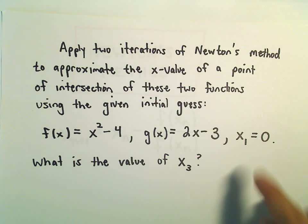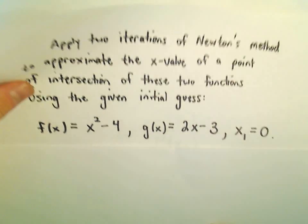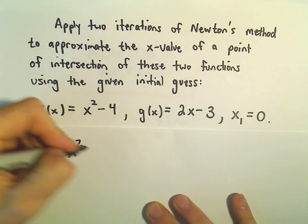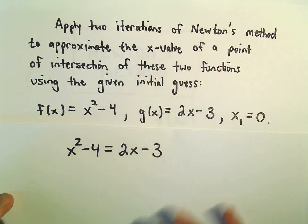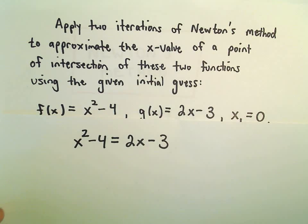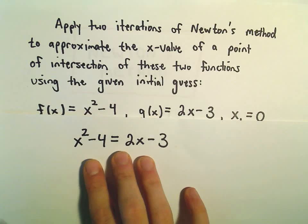And we're even going to be given the first guess that x sub 1 equals 0. So if we try to find points of intersection, we can just set the two functions equal to each other. What Newton's method does is it takes an equation and tries to find the zeros or the roots. So I'm going to turn this into an equation where one side is 0.